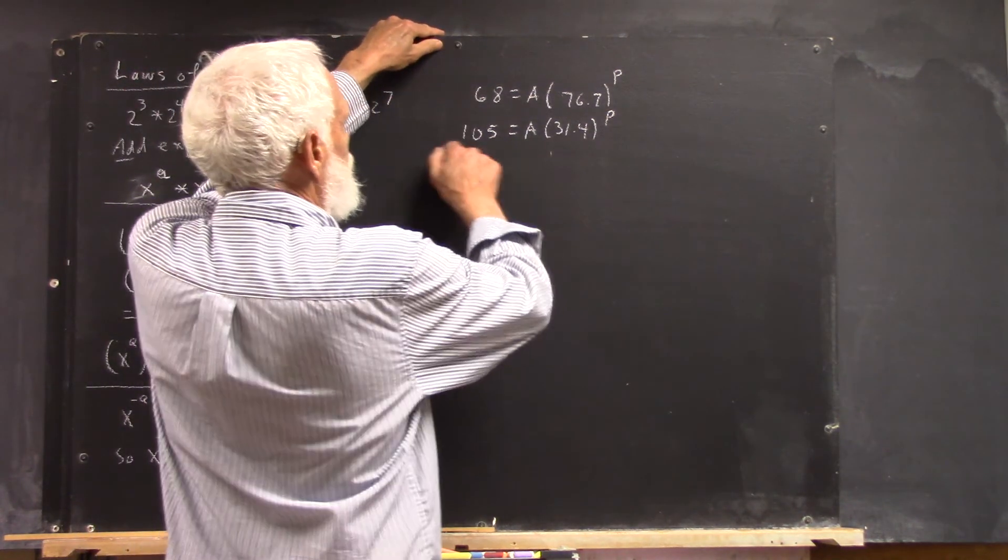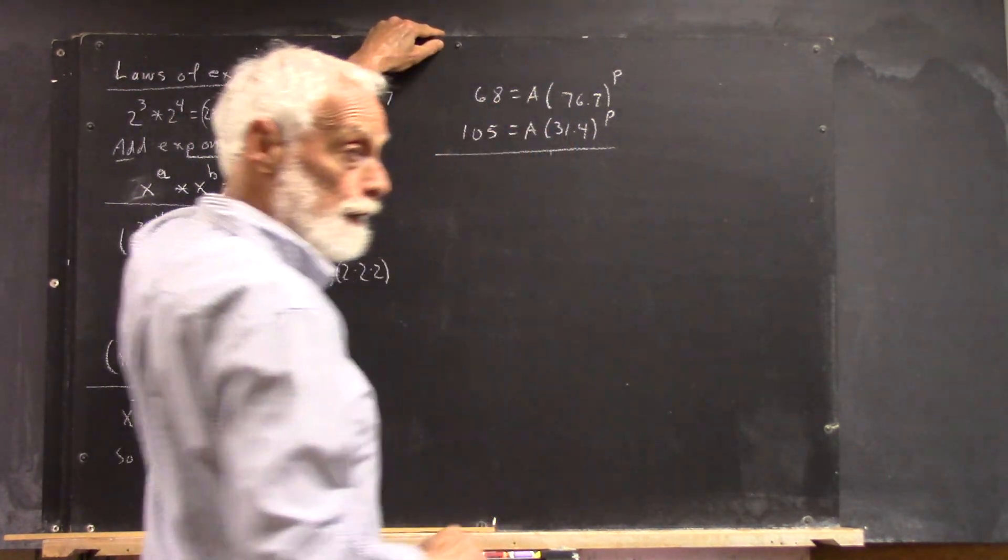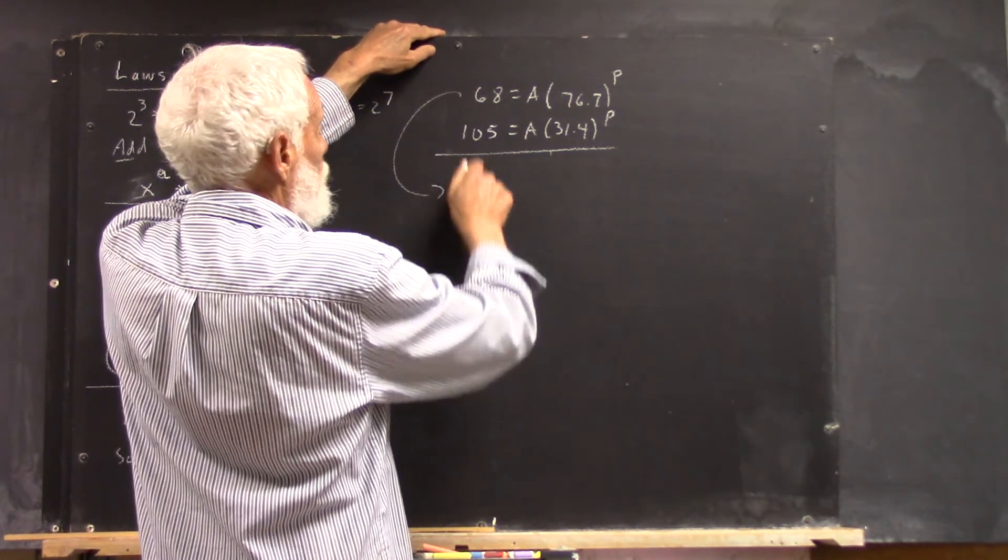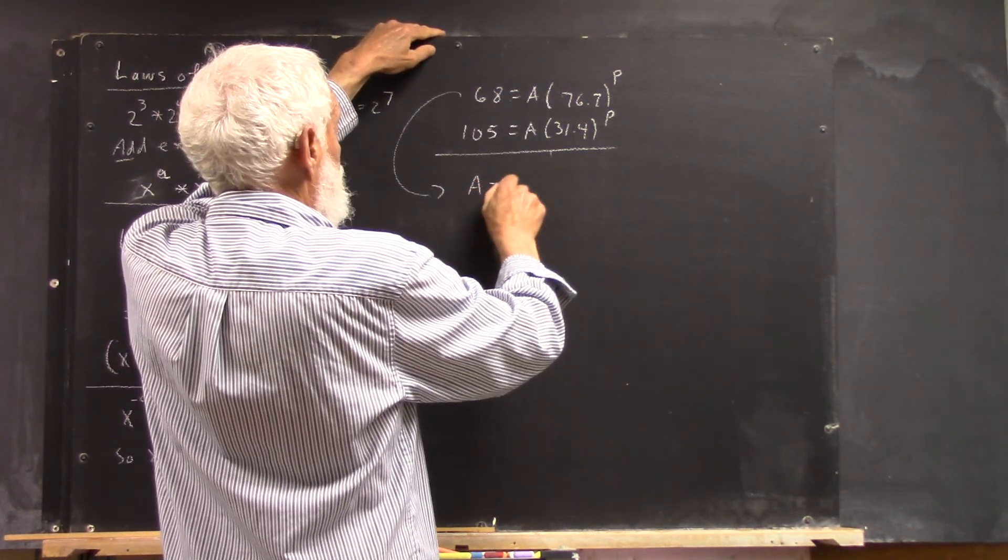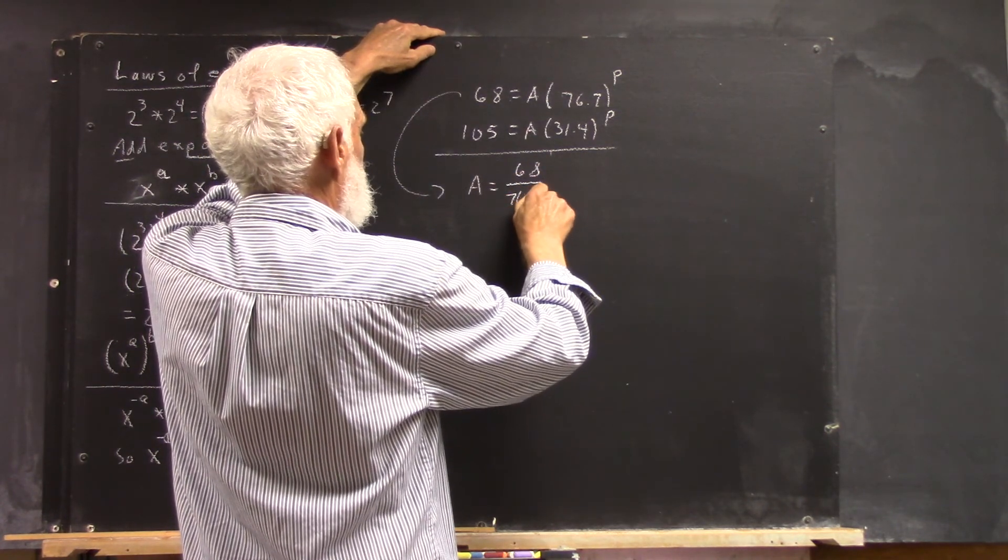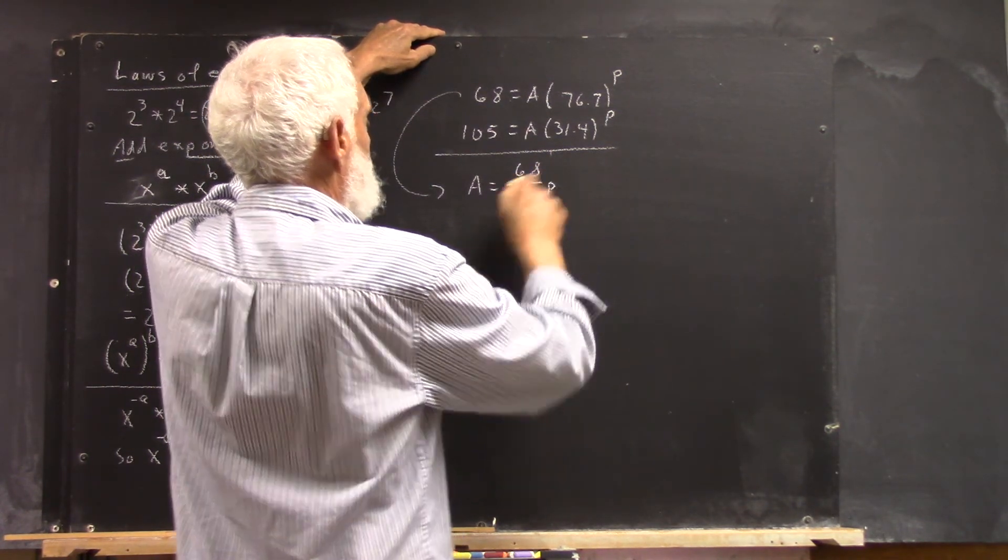Okay, so this suggestion was, let's solve for A in this one, right? So I'm just going to use arrows to indicate that from this equation, in a very straightforward way, we get A equals 68 over 76.7 raised to the P, right?